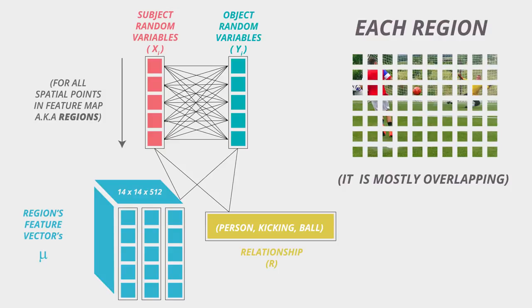x greater than threshold means it belongs to the subject. y greater than the threshold means it belongs to the object. Now the graph is defined as follows. The nodes here are the regions corresponding to each point in feature map and the edges are linking all the subjects and the object regions.